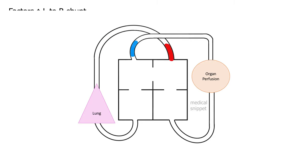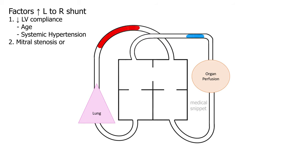As the patient ages, the left ventricle becomes less compliant. Thus the shunt across the defect increases as the patient ages. Patients with systemic hypertension also have less compliant left ventricle, so these patients also have increased shunt across the atrial septal defect.